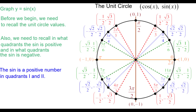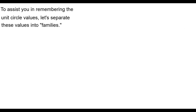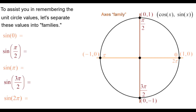The sine is a positive number in quadrants 1 and 2, illustrated here. Remember that the sine is the second coordinate of the point. The sine is a negative number in quadrants 3 and 4. To assist you in remembering the unit circle values, let's separate these values into what I will call families. We'll first look at the axes family — the values you should know from going on the axes.